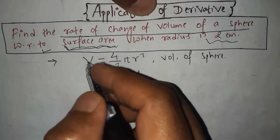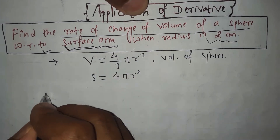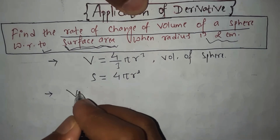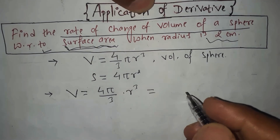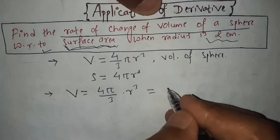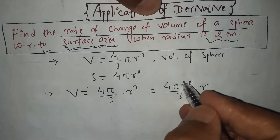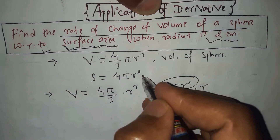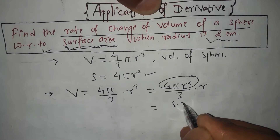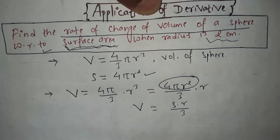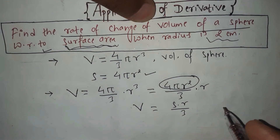Let's derive the relation between the volume and the surface area. The volume V = (4/3)πr³ can be rearranged as V = (4πr²/3) × r. Here, 4πr² is just the surface area S, so we can write V = (S × r) / 3. Therefore, the volume can be expressed as V = Sr/3.